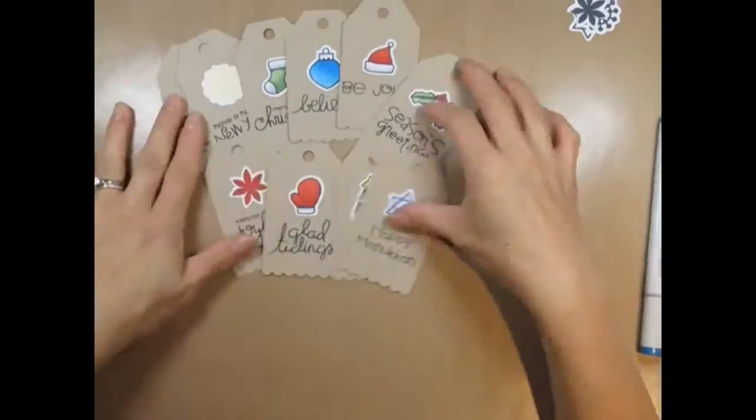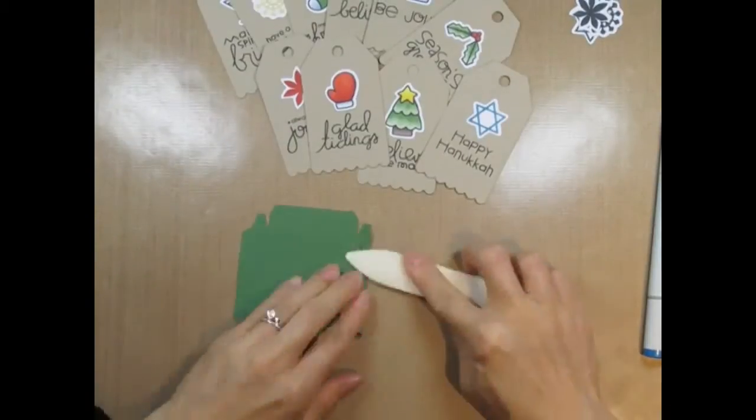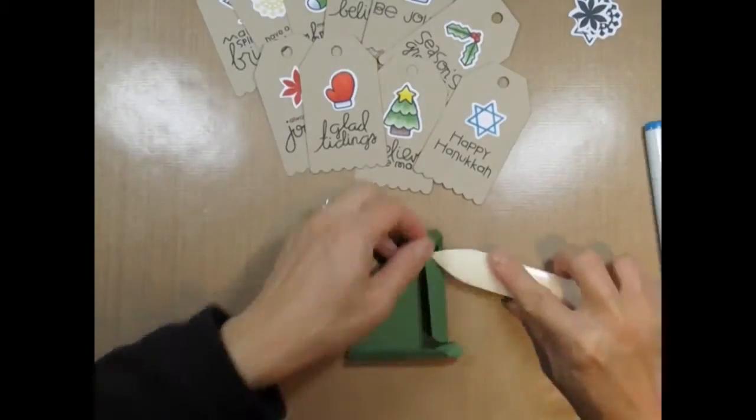So here are all the tags. Now I'm scoring the shopping bag die and folding it up so it can be adhered to the wine bottle tag.